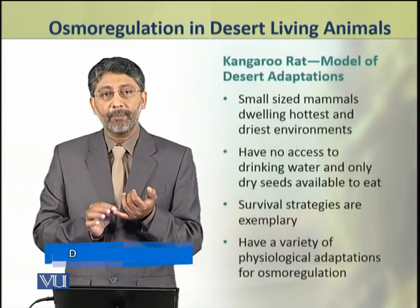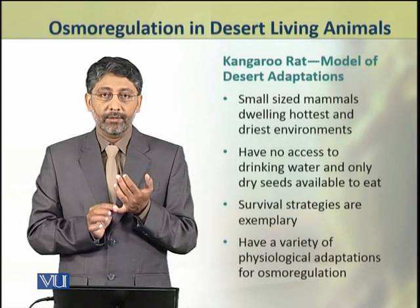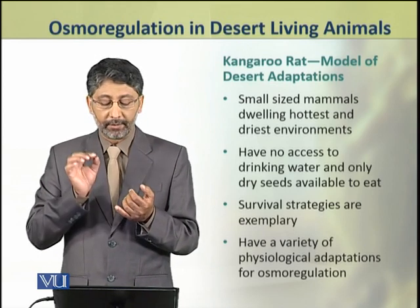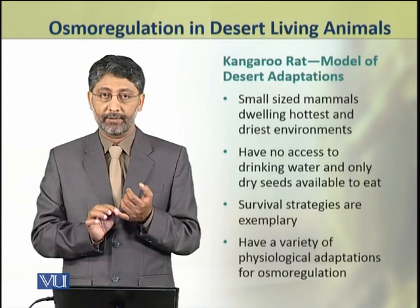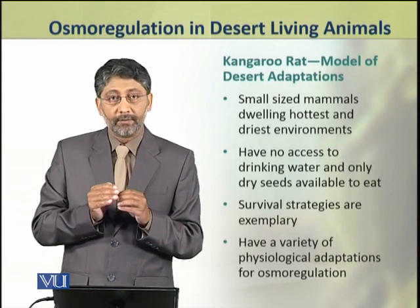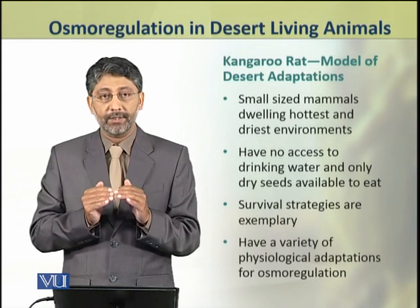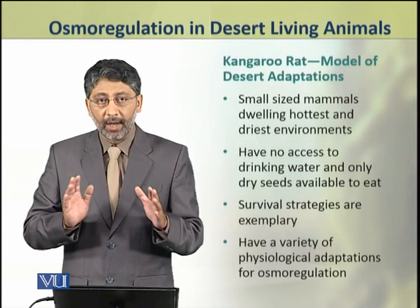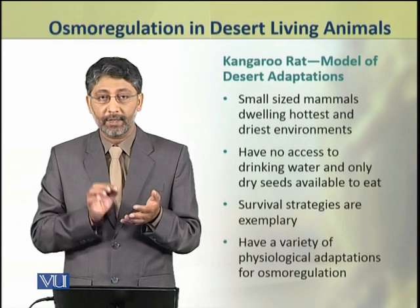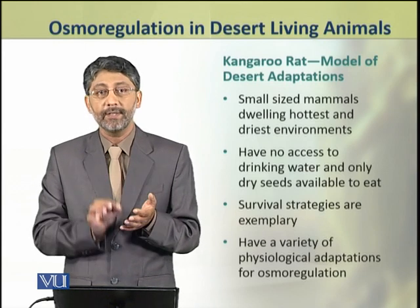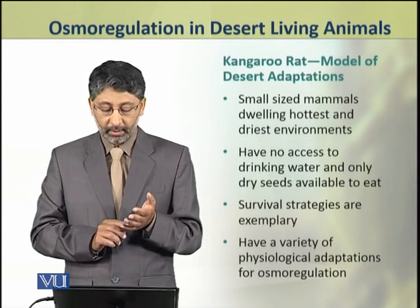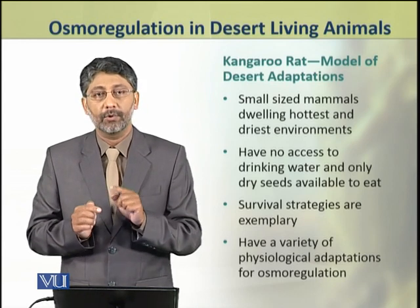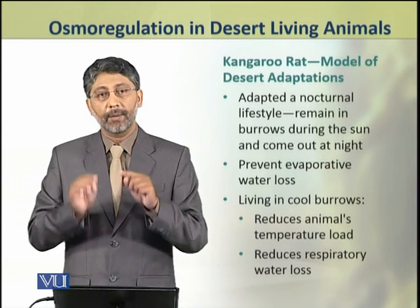We shall take an example of the kangaroo rat, which is a small mammal living in some of the hottest and driest environments of deserts. It presents exemplary survival strategies in such an environment. They live in an environment which has no available drinking water and have only dry seeds to eat. They have a variety of physiological adaptations for osmoregulation.